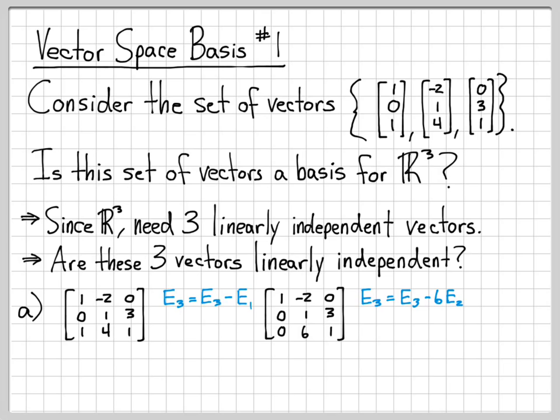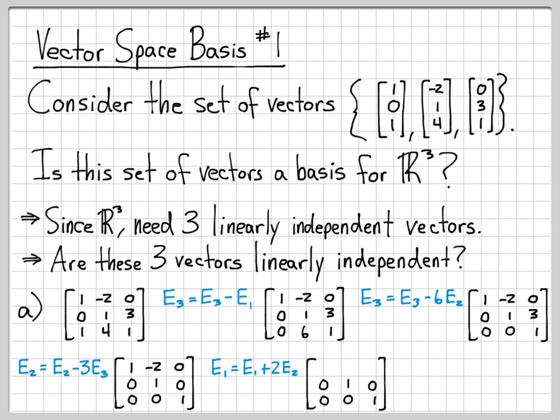Then I can replace row three with row three minus 6E2 to get rid of the six there. So I'll have a zero, a zero, and a one. I can replace E2 with E2 minus 3E3. So rows one and three don't change, but row two will turn into zero, one, zero. And then I can replace row one with row one plus 2E2. So rows two and three don't change, but row one will be one, zero, zero.